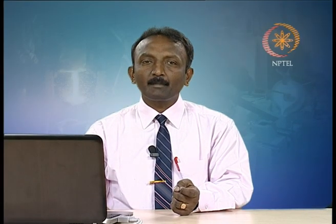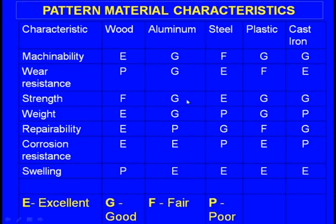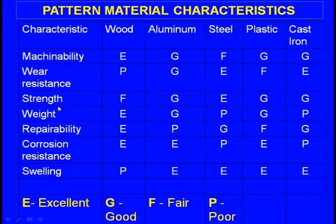Now let us compare different pattern materials and their performances. The materials considered are wood, aluminum, steel, plastic, and cast iron. The characteristics are rated as E (excellent), G (good), F (fair), and P (poor). For wood: machinability is excellent, wear resistance is poor, strength is fair, weight is excellent (easily carried), repairability is excellent, corrosion resistance is excellent, but swelling resistance is poor — once it comes in contact with moisture it swells. For aluminum: machinability is good, wear resistance is good, strength is good, weight is good, repairability is poor, corrosion resistance is excellent, swelling resistance is excellent.